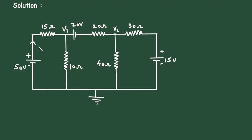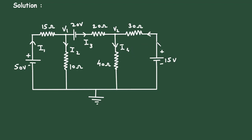Now let's assume this is current I1 — all the currents towards this reference node, from the positive terminal to the reference node. This is current I2, this is current I3, this is current I4, and this is current I5 from positive to this ground.